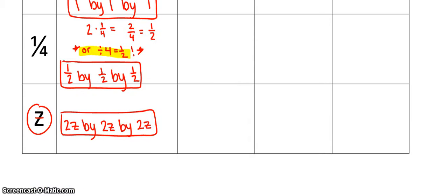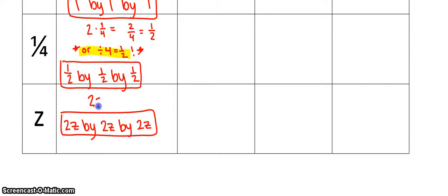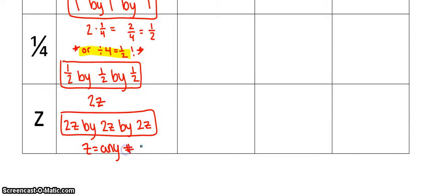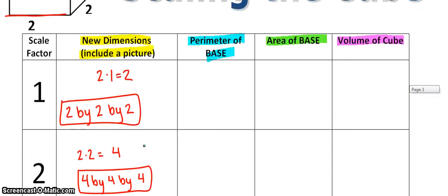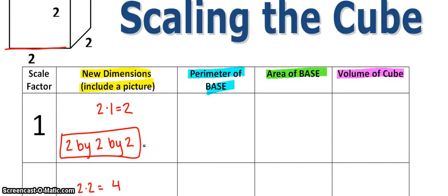Now z basically represents any scale factor. So no matter what z is, you're going to take 2 and multiply it by z, giving you a 2z by 2z by 2z cube, where z can be any number — it's just a placeholder for any scale factor. That's a review of how to scale an object: you scale the dimensions.